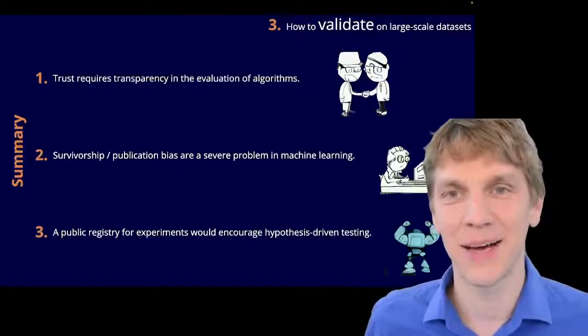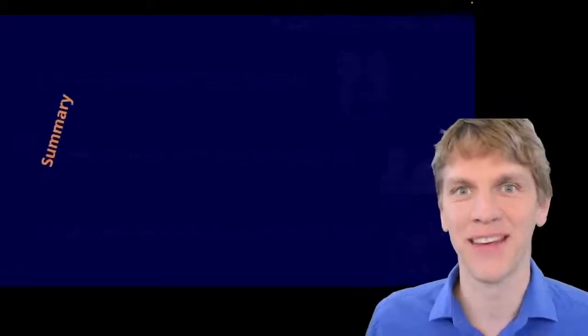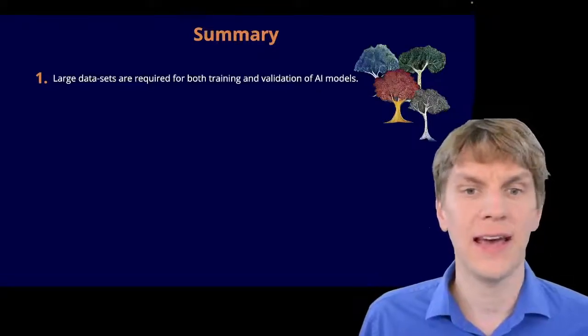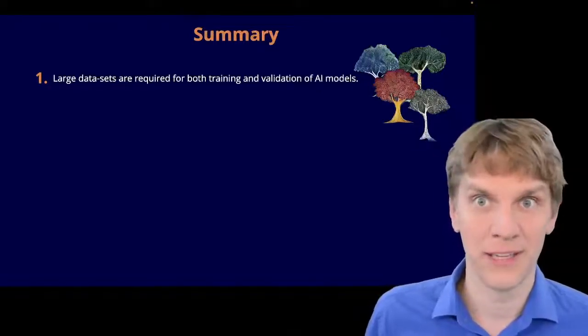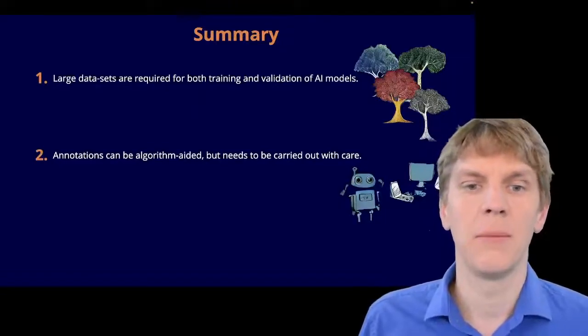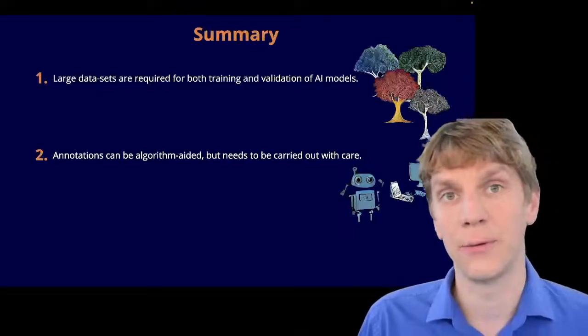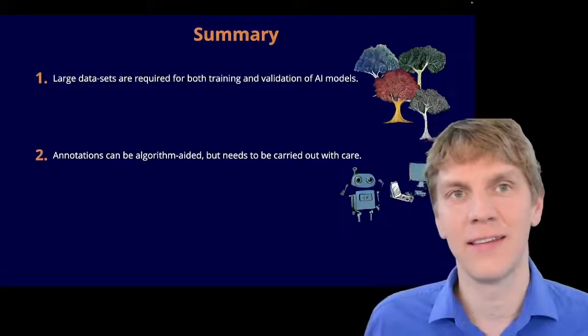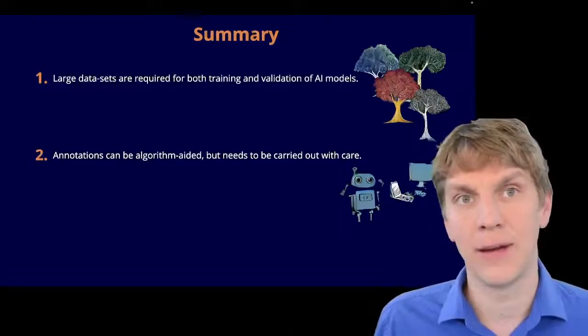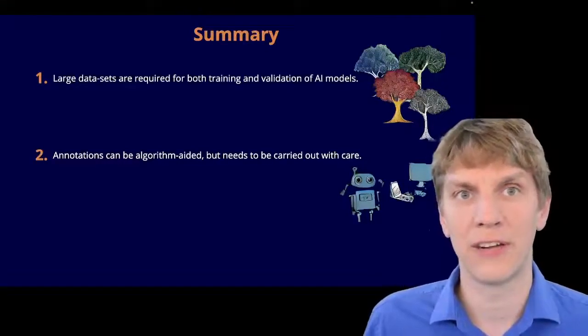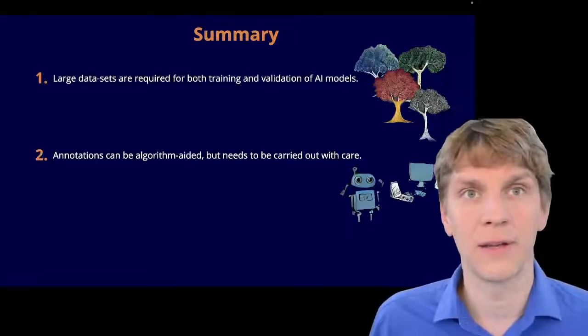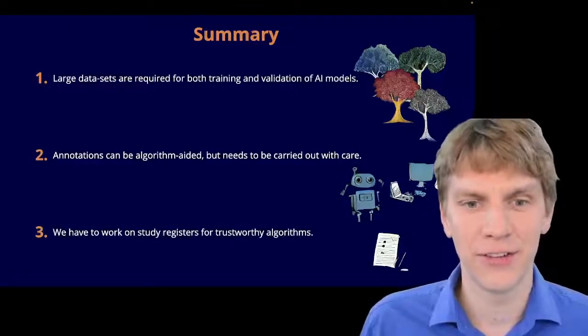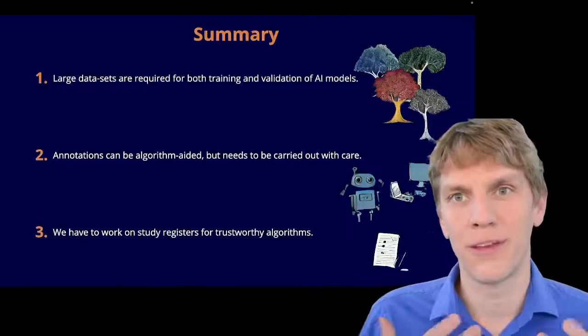All right, so let's come to my summary and conclusion of this talk, which is as the following. So, first of all, large-scale datasets are required for both training and validation of AI models. Second, annotations can be done algorithm-aided, but they need to be really dealt with care when doing so. So, you have to have at least some kind of holdout validation set that you didn't do in this algorithm-aided way, because else you just cannot find out about potential biases that you induced while running the algorithms in the annotation loop. And finally, I think that we have to work on study registers in order to achieve trustworthy algorithms in our field.